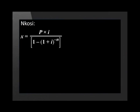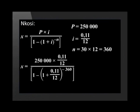We are now going to calculate Nkosi's monthly installment on the R250,000 flat with an interest rate of 11% per annum compounded monthly over 30 years. In Nkosi's case, P equals 250,000, i equals 0.11 divided by 12, and n equals 30 years multiplied by 12 months, which equals 360. Therefore, x equals 250,000 multiplied by 0.11 divided by 12, over open bracket one minus open bracket one plus 0.11 divided by 12 close bracket to the power of minus 360 close bracket. Punching these values into the calculator gives us x equals R2,380.81.